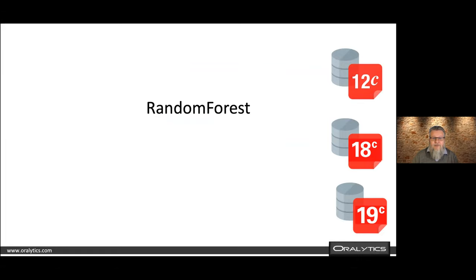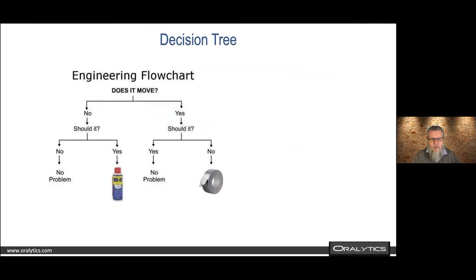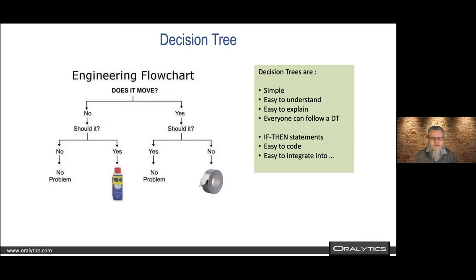The first algorithm is random forest, which is based on using decision trees. Here's a very simple decision tree — whether to use duct tape or WD-40 to loosen something. Decision trees are simple, easy to understand, easy to explain, and can be transformed into simple if-then statements. They're easy to code, easy to extract rules from, and if you're worried about GDPR, you can extract these rules for explainability.